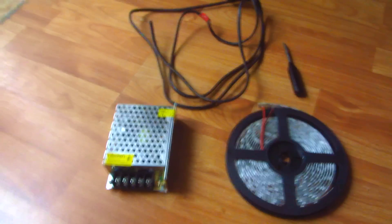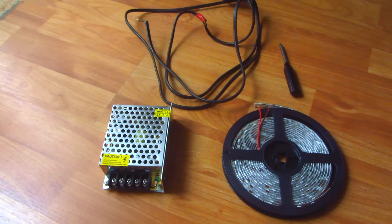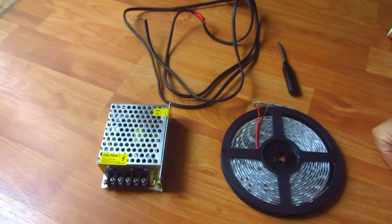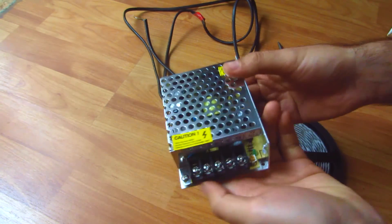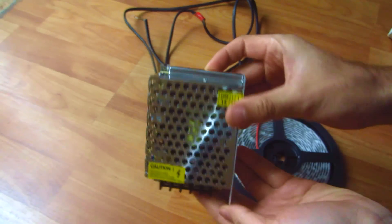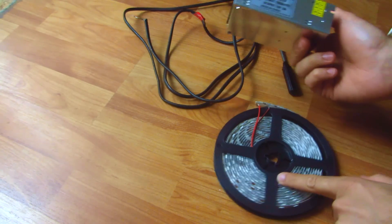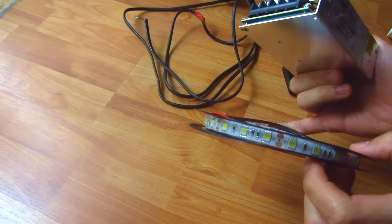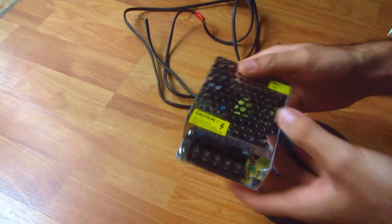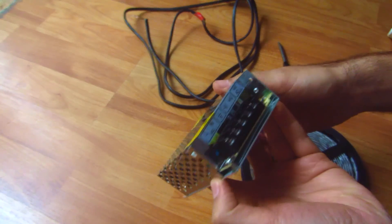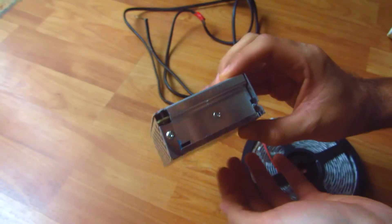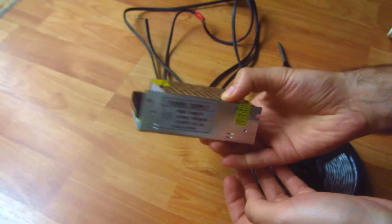This video is about testing an LED driver, which is basically a transformer for LEDs. This is a strip of LED 5050 type, and this transformer is rated for 5 amps.